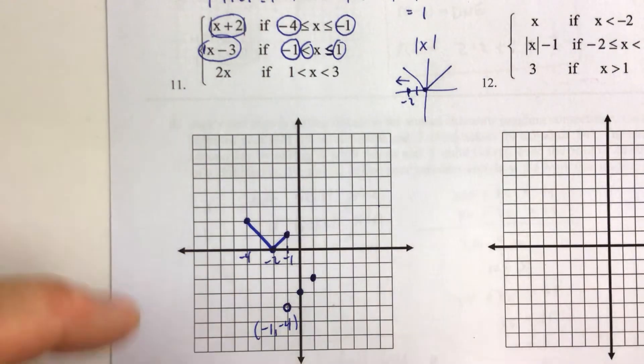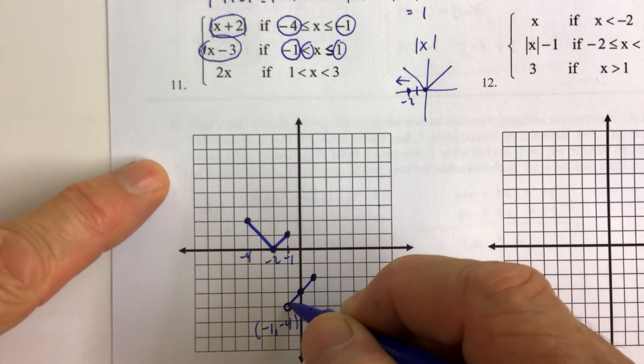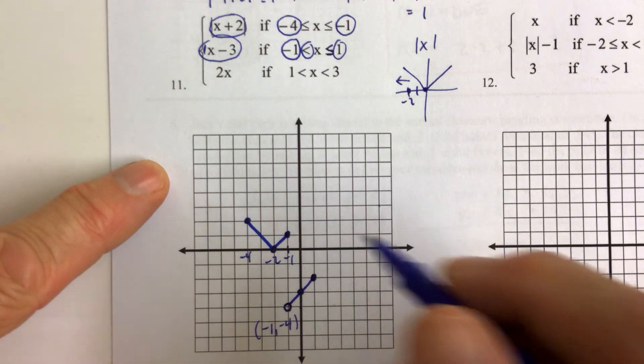And we connect those three points, remembering that x is not defined on this piece when x is equal to negative 1. All right. So that's the second piece.